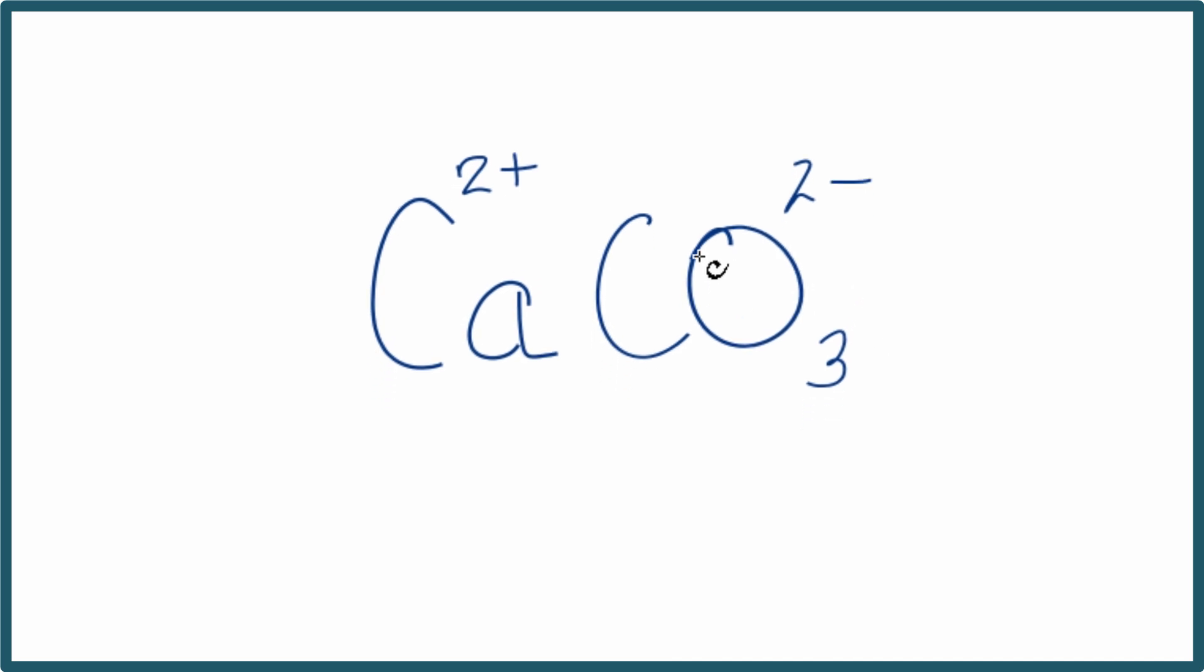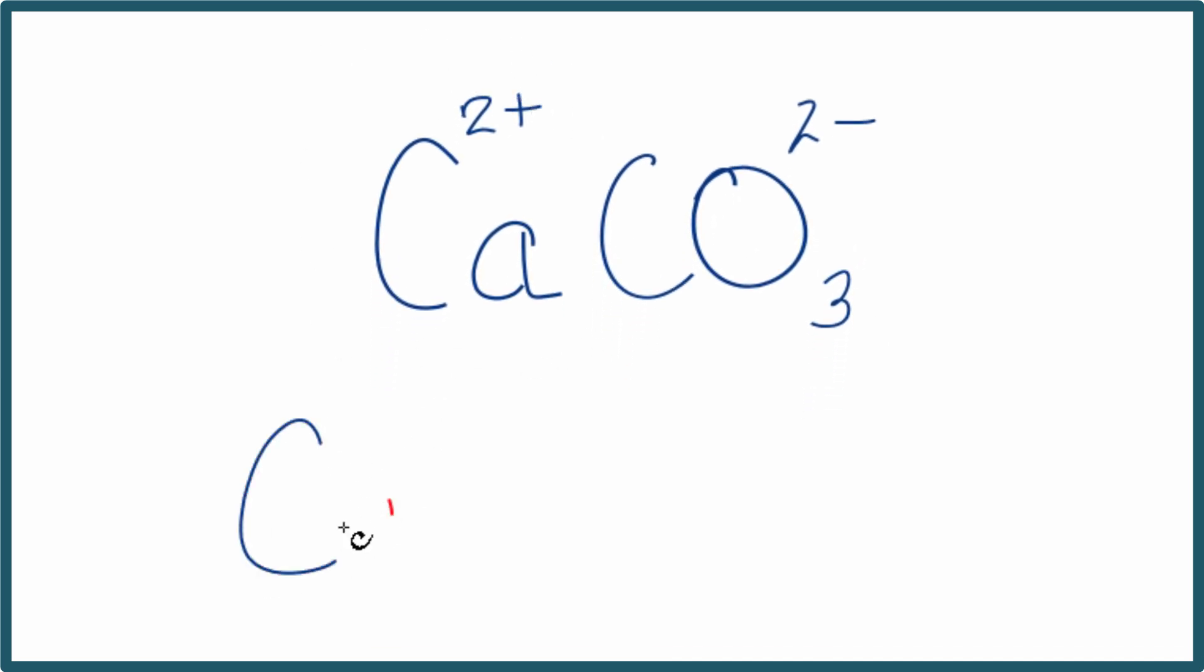In order to find the number of ions, we have the one calcium ion. That's the Ca2+. And then we have the one carbonate ion, CO3. The whole thing has a two minus ionic charge.